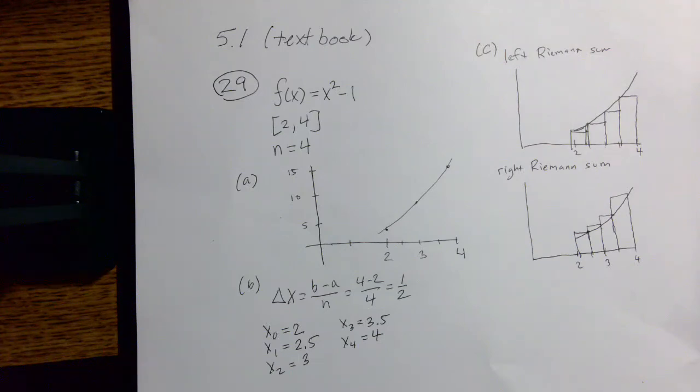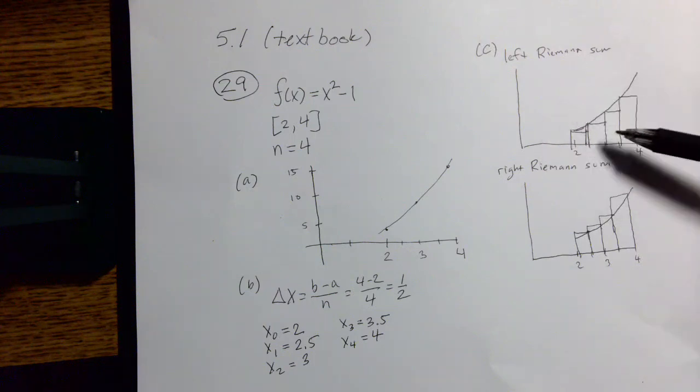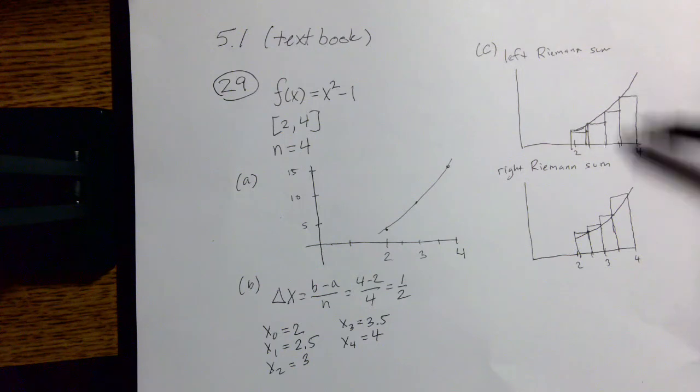That's the opposite for decreasing functions. Of course, plenty of functions are neither always increasing or always decreasing on the given interval, so we don't always know in advance whether we have an overestimate or underestimate. But in a case like this with an increasing function, we know for sure that the value we get for a left Riemann sum will be lower than the true area under the curve.